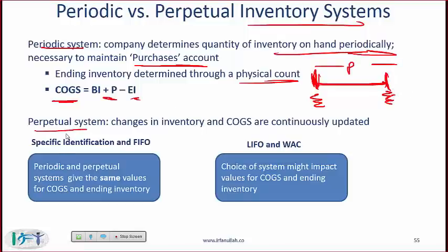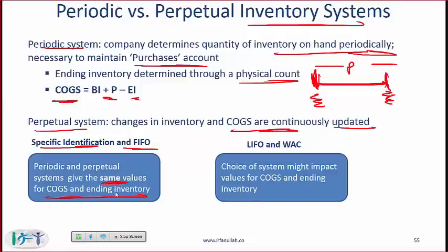With a perpetual system, a company uses software such as SAP or Oracle where every time it sells, COGS is automatically updated — so a purchases account is not needed. Companies using specific identification or FIFO get the same COGS and ending inventory values under either system, but companies using LIFO or weighted average cost will see different numbers depending on whether they use a perpetual or periodic system.